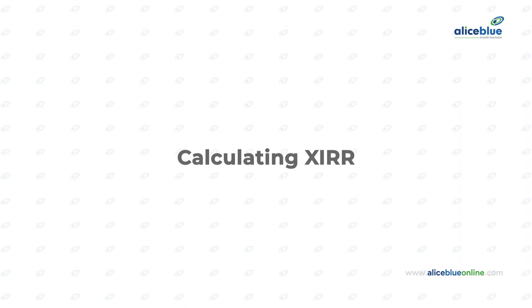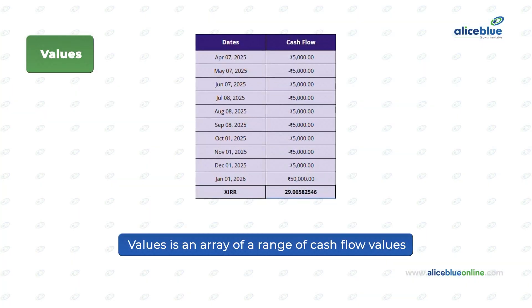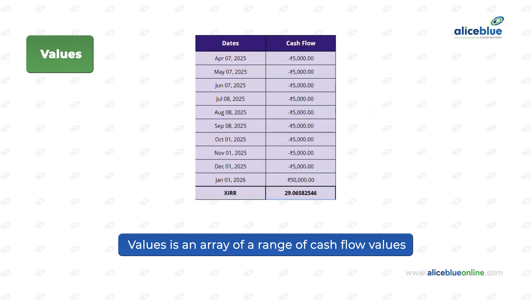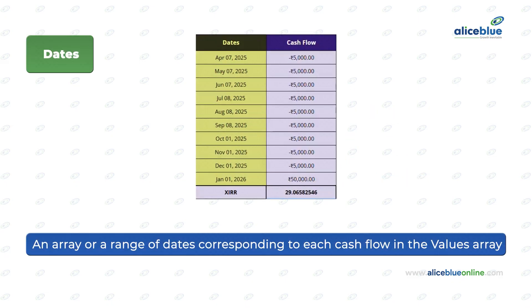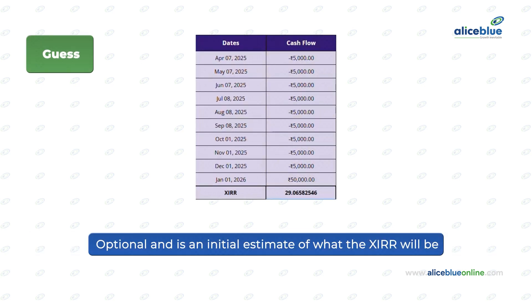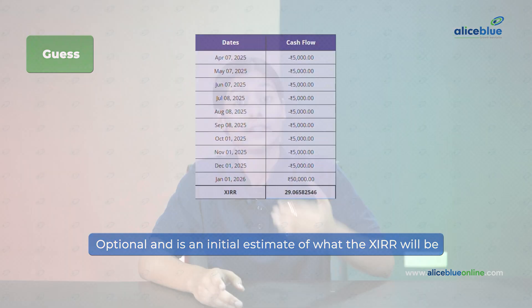To calculate XIRR, it requires three inputs: values, dates, and guess. Value is an array or range of cash flow values, where investments are negative and withdrawals are positive. Each value represents a different cash flow event. Dates is an array or range of dates corresponding to each cash flow in the values array. Guess is optional and is an initial estimate of what the XIRR will be, which helps Excel's calculation.